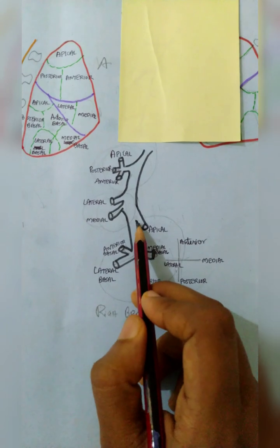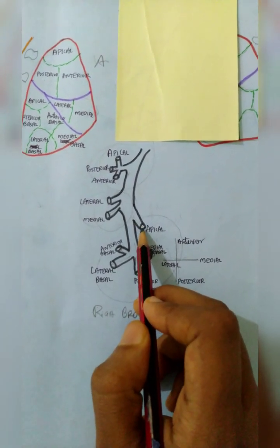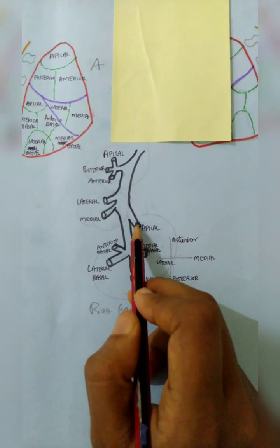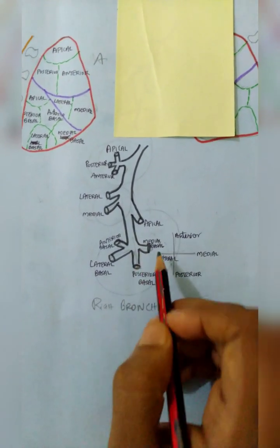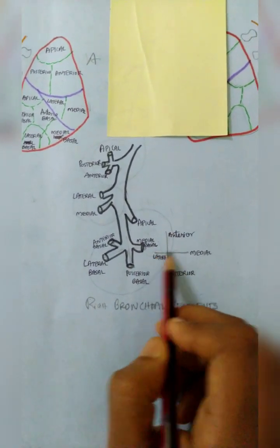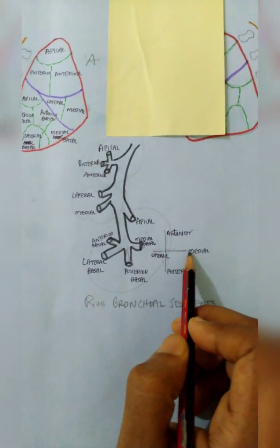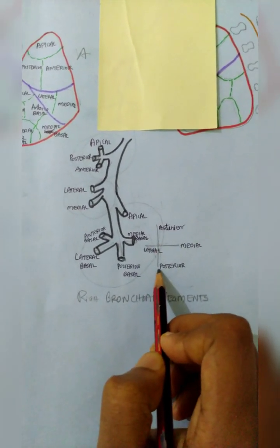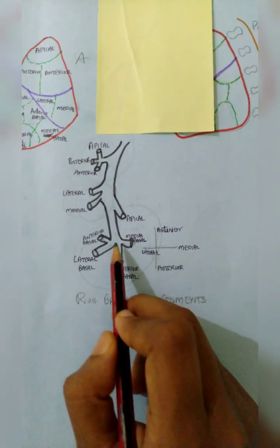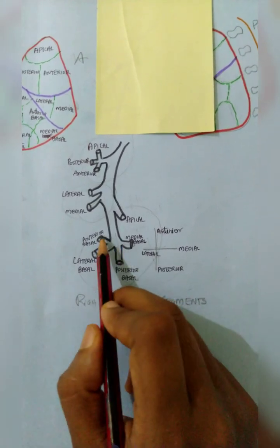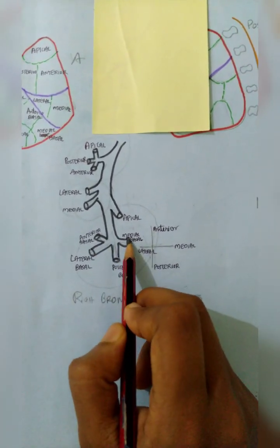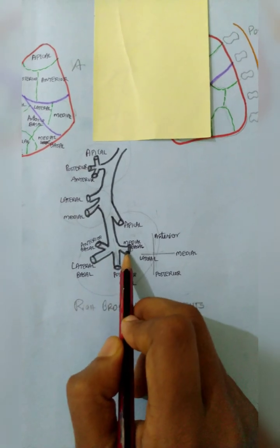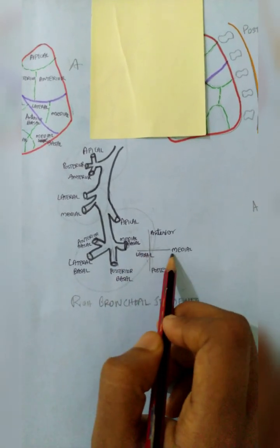This is the lower lobe. Here we have to draw the apical segment because it arises from the apex, so it is at the top. To remember the remaining segments, think of a cross — medial, lateral, anterior, and posterior. So we have apical, then anterior, posterior, medial, and lateral. Remember as a cross.